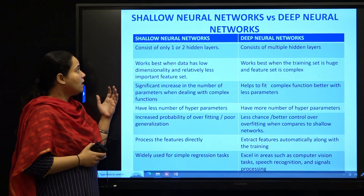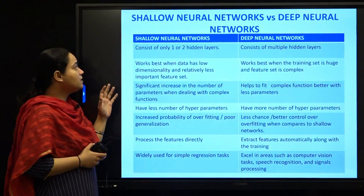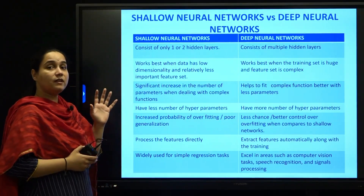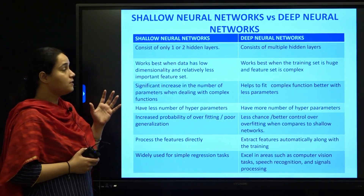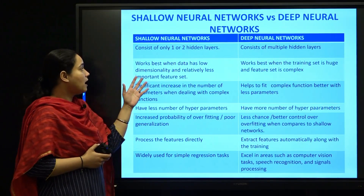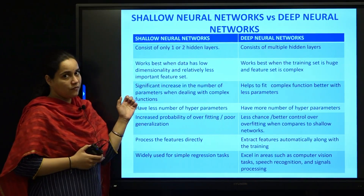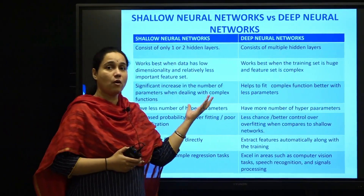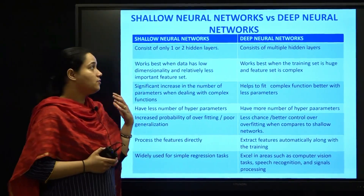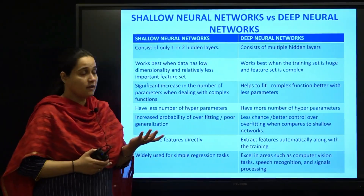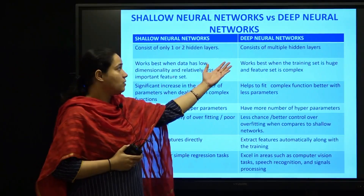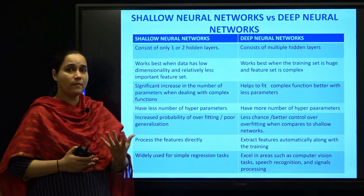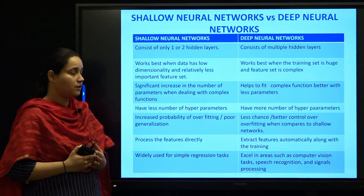The second difference is that a shallow neural network works best when you have a smaller dataset — that is, when the dimensionality of your data is low and you have a relatively less important feature set. But when you have a complex dataset and the training requirement is very high, deep neural network will be used. It works best when the training set is huge and you have a complex feature set.